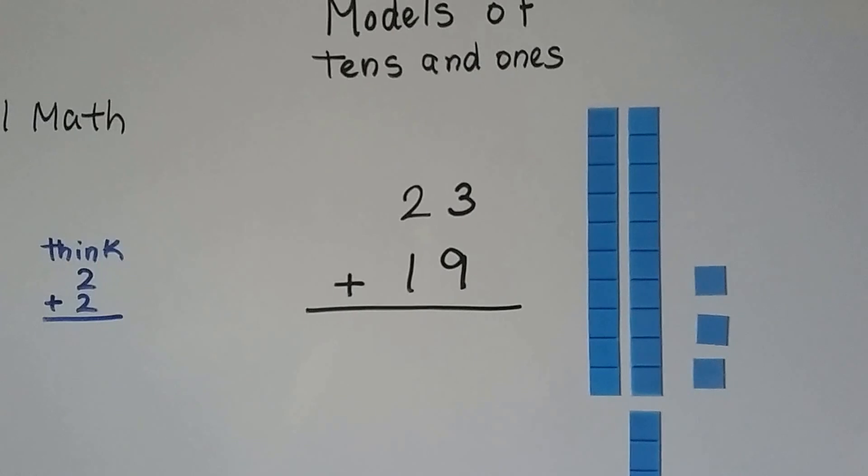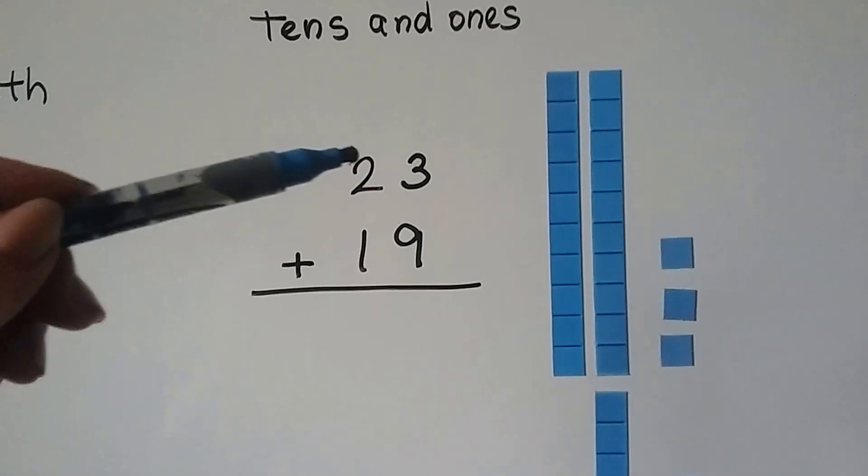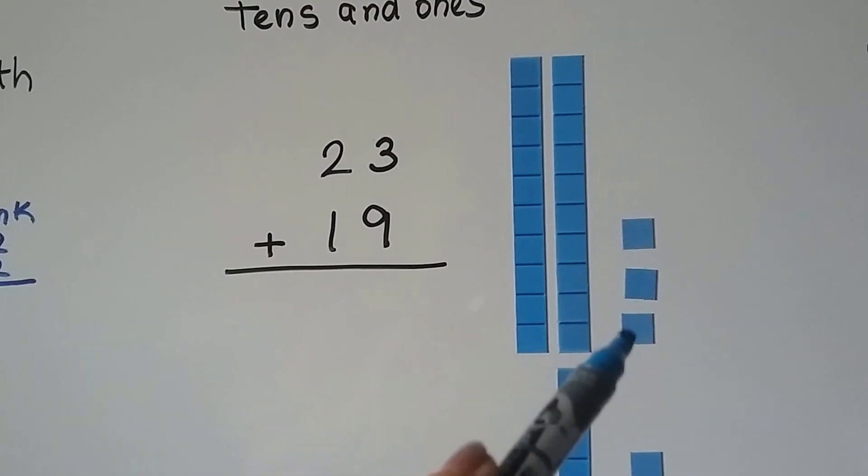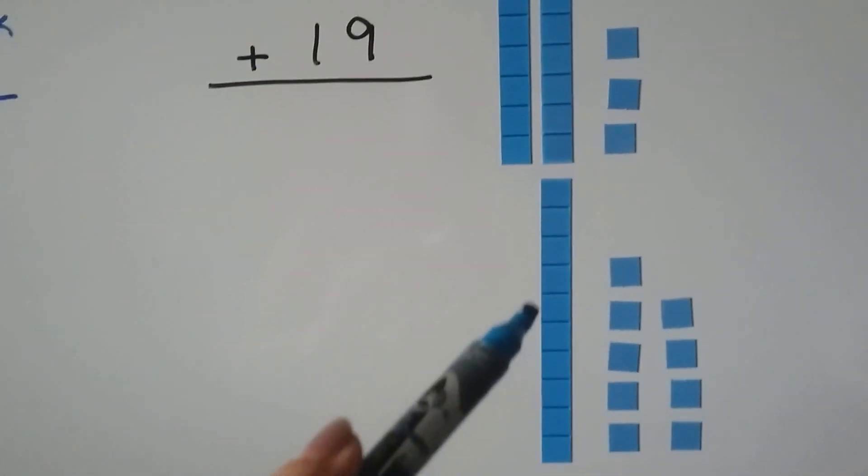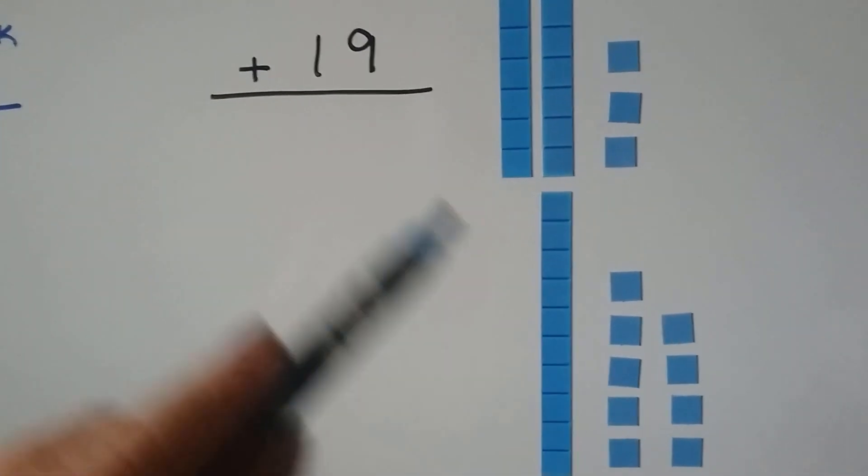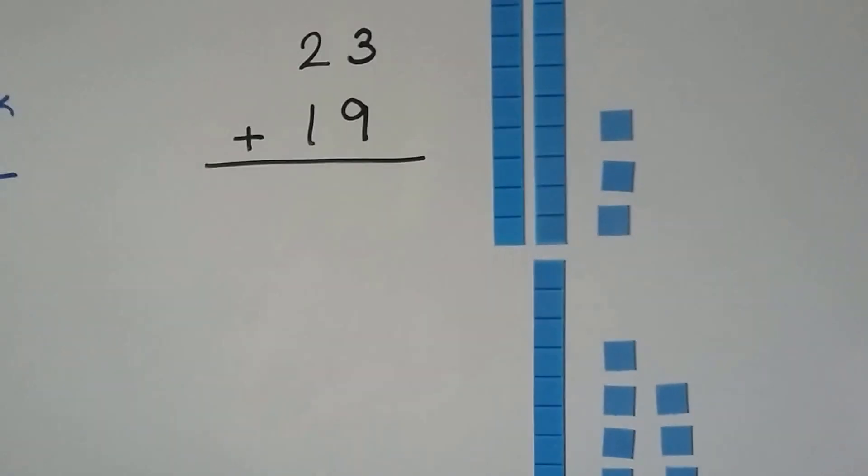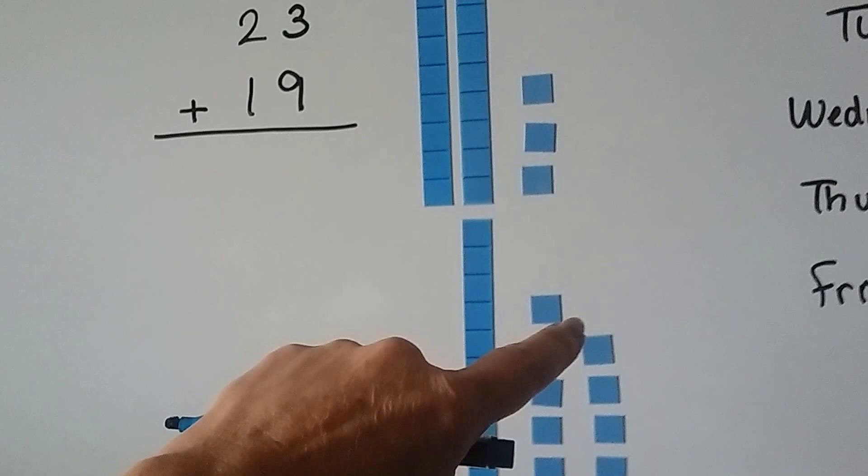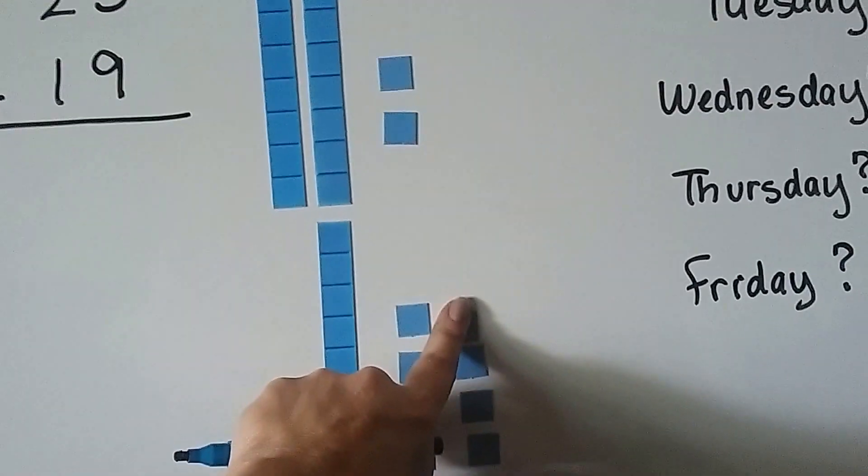We could use models of tens and ones. If we have 23 plus 19, we can use two tens and three ones for the 23, and one 10 and nine ones for the 19.